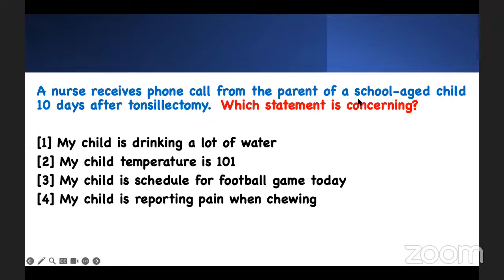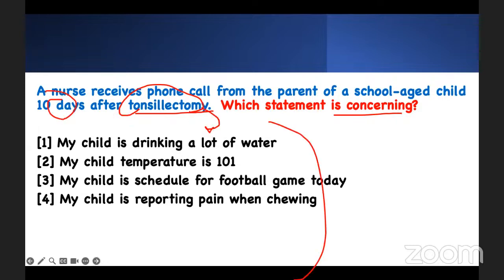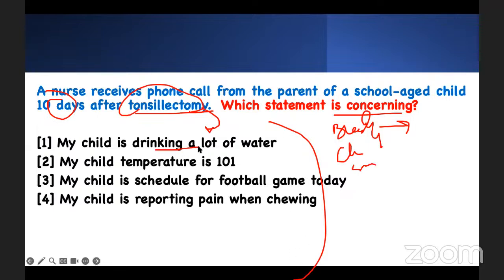A nurse received a phone call from the parent of a school-age child, 10 days after tonsillectomy. Which statement is concerning? Buzzword: tonsillectomy, 10 days. After 10 days of tonsillectomy, this is what they tell you — what should you worry about? When I'm taking these tests, I think about tonsillectomy: bleeding is number one. And bleeding signs are: clearing your throat, swallowing problems, swallowing too much. The parent says: the child is drinking a lot of water, temperature is 101, he's going to a football game, and pain when he chews.